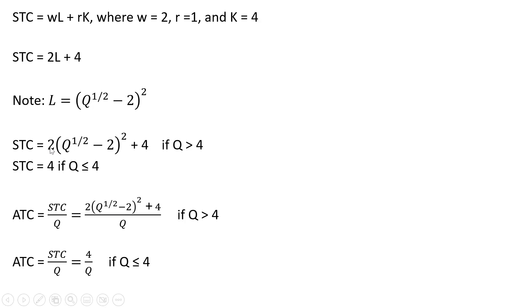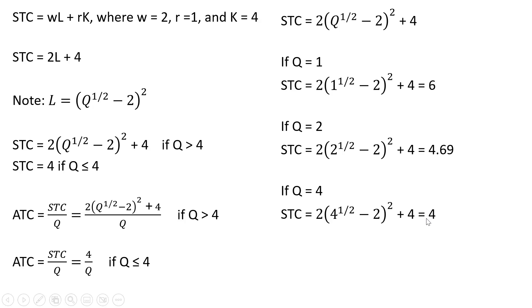Now so there's no confusion as to why I'm breaking this short run total cost up into units of output greater than 4 or less than or equal to 4, consider the following. If Q is 1, plugging 1 into this equation, short run total cost is $6. If we plug 2 into this equation, short run total cost is $4.69. So this is kind of strange. We're producing more output and the total cost of production is falling. If Q equals 4, plugging that into this production function, short run total cost equals $4.